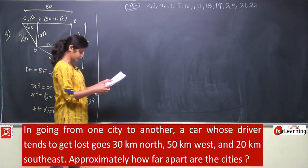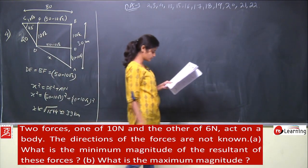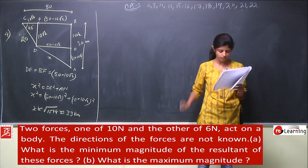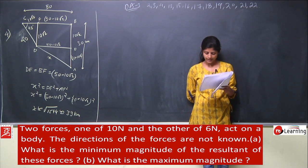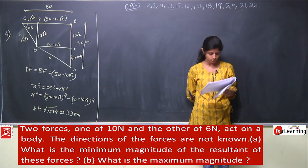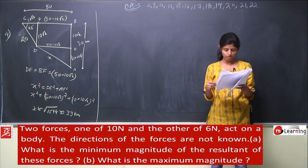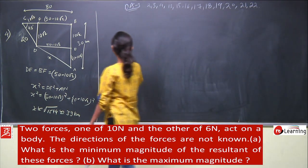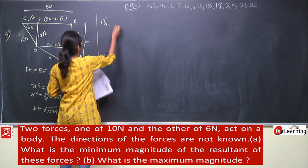Next is question number 13. Two forces, one of 10 Newton and the other of 6 Newton, act on a body. The direction of the forces are not known. What is the minimum magnitude of the resultant of these forces?